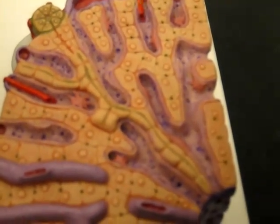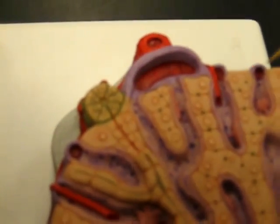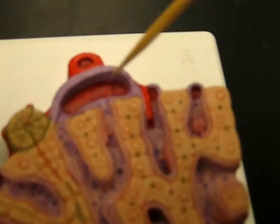Going back to the cross-section, this over here is the bile collecting duct, or bile duct. Over here is the venule of the hepatic portal vein and the hepatic vein.